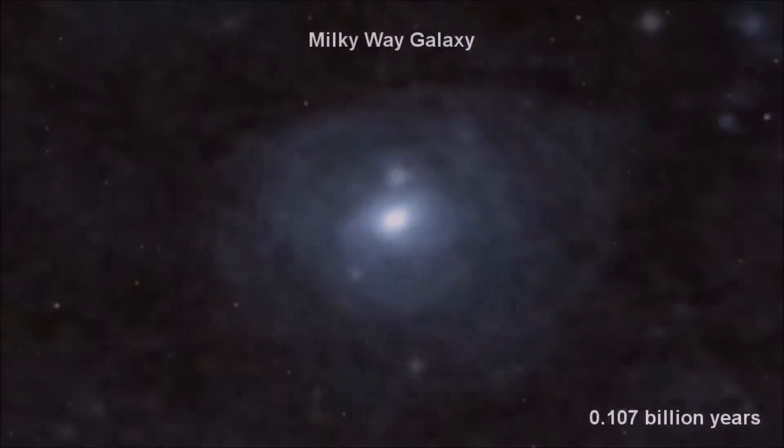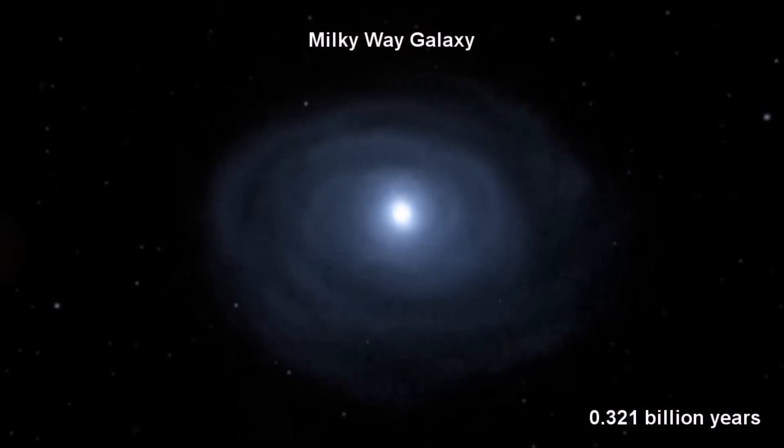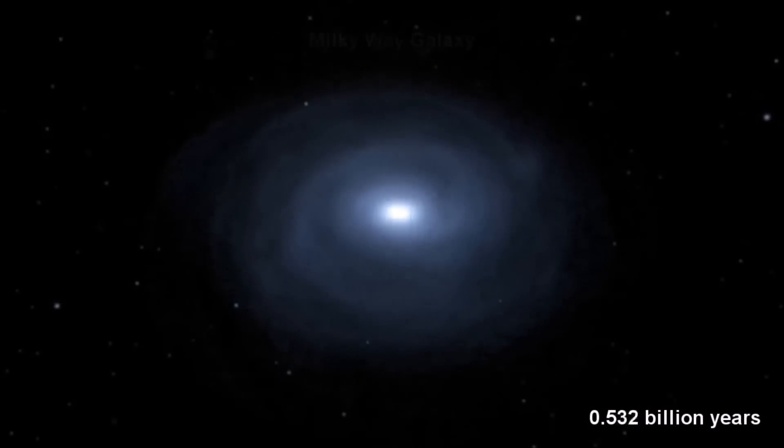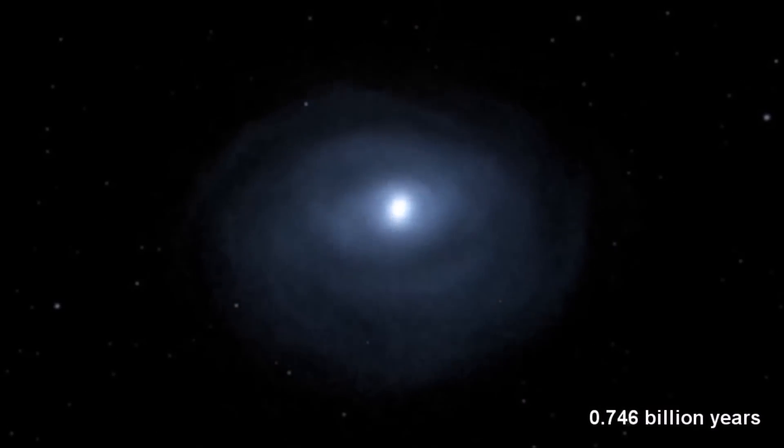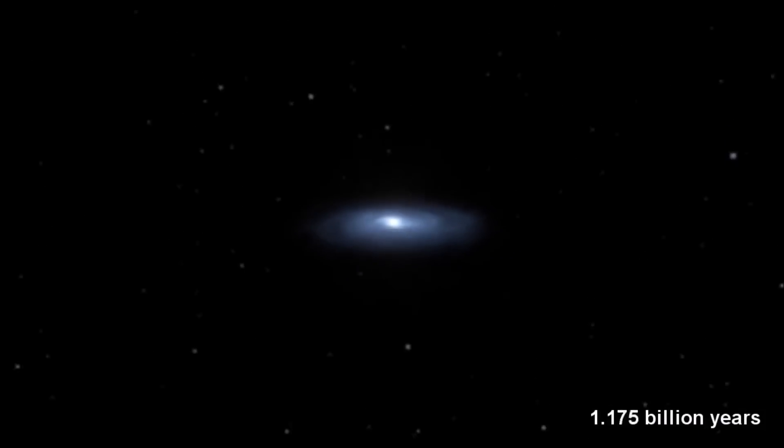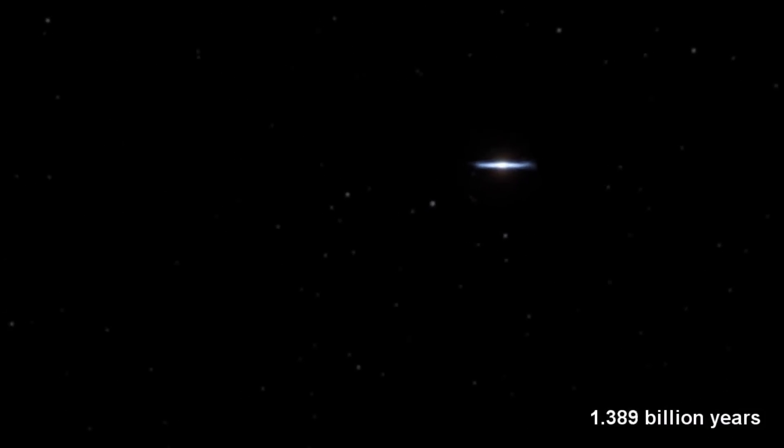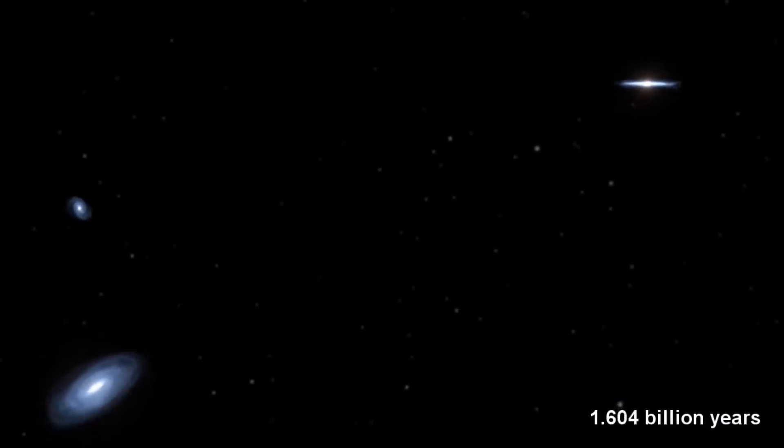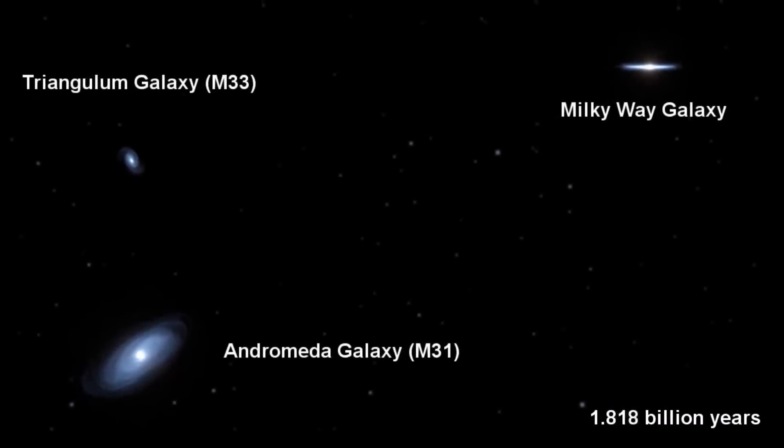The Andromeda galaxy is heading right for us, at an alarming speed. However, there's a long time to go yet. In approximately four and a half billion years, the Milky Way and Andromeda galaxies will collide head-on, forming a new, much larger, elliptical galaxy. How do we know this? Well, there are a few tell-tale signs, but let's consider the main one, the Doppler effect.